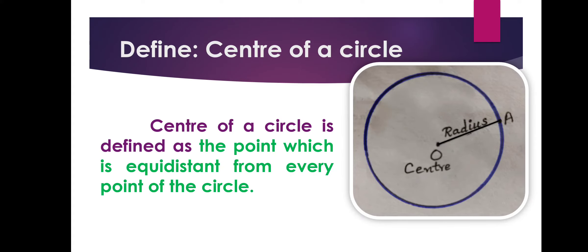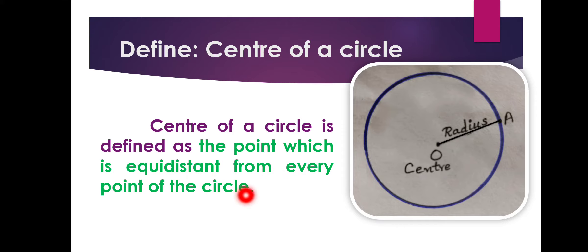That fixed point is called the center. That is our second definition. The center of a circle is defined as the point which is equidistant — equidistant means at equal distance. The point will be at equal distance from every point of the circle. This fixed point is at equal distance from any point on the circle. That fixed point is called center.